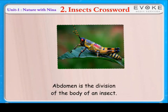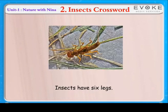Abdomen is a division of the body of an insect. Insects have six legs.